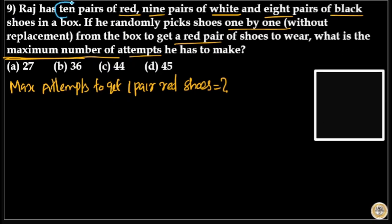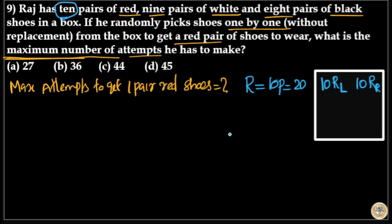Raj has 10 pairs of red shoes, meaning 20 individual shoes — 10 left foot and 10 right foot red shoes. He also has 9 pairs of white shoes, which equals 18 shoes — 9 left foot and 9 right foot white shoes.